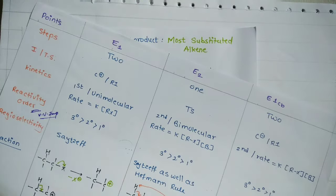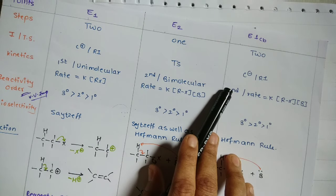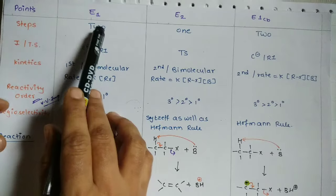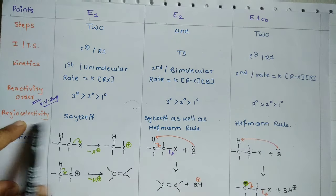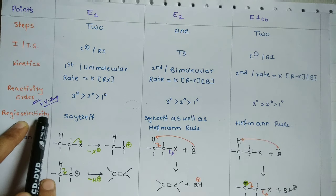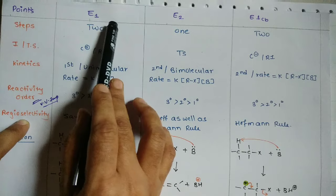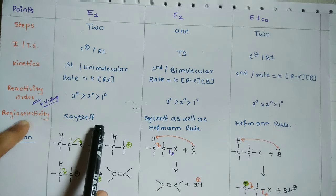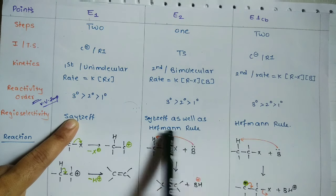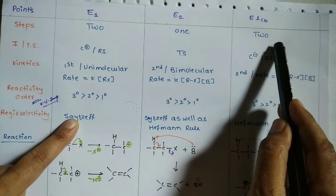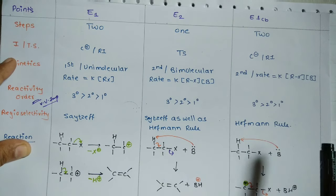Looking at the chart of E1, E2, and E1 conjugate base, one important point is what we call EJ selectivity. The E1 molecular elimination reaction follows the SIDZP rule, whereas E2 elimination follows both the SIDZP rule as well as the Hoffman rule, and the E1 conjugate base elimination reaction follows the Hoffman rule.